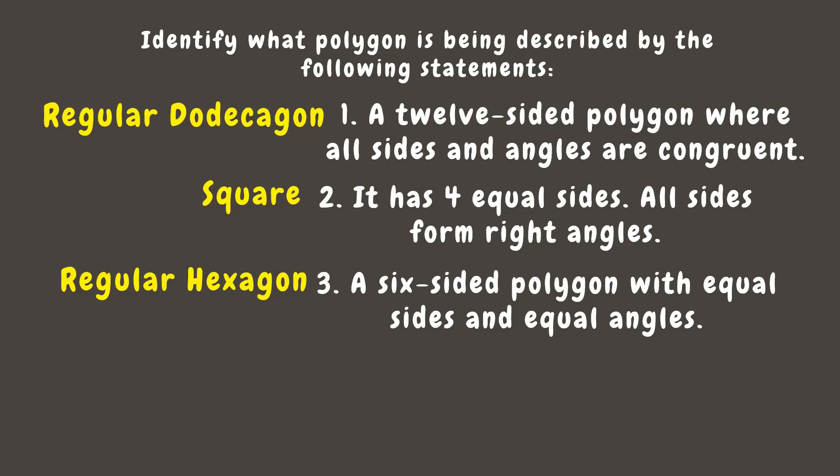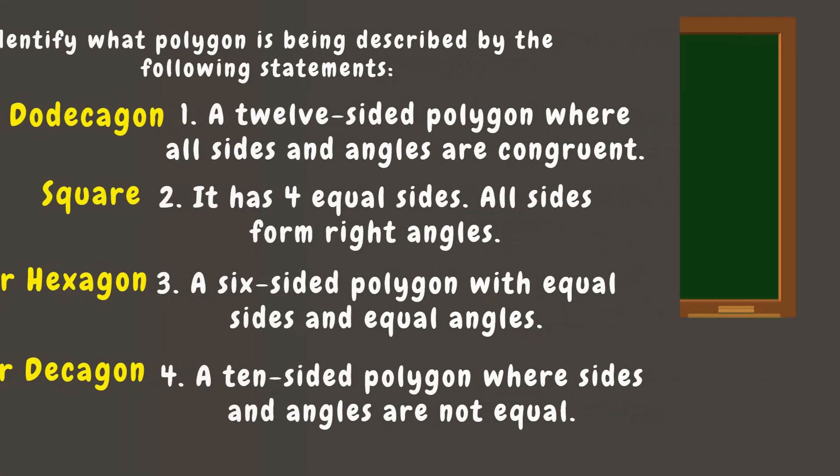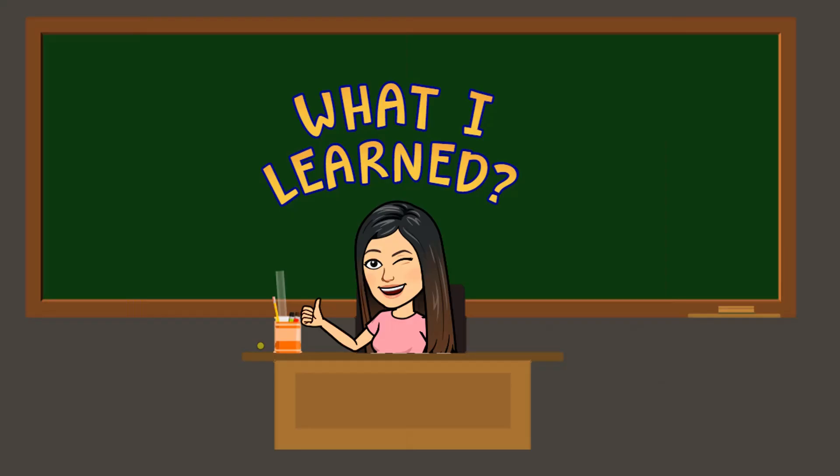Next: a six-sided polygon with equal sides and equal angles — this is a regular hexagon, since a six-sided polygon is called a hexagon, and since it is equilateral and equiangular, we call it a regular hexagon. Last: a ten-sided polygon where sides and angles are not equal — a ten-sided polygon is called a decagon, and since its angles and sides are not equal, it is an irregular decagon.